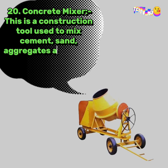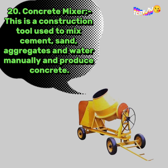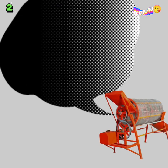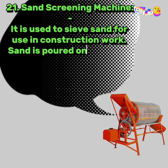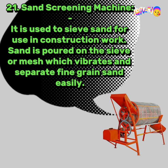20. Concrete Mixer: this is a construction tool used to mix cement, sand, aggregates and water manually and produce concrete. 21. Sand Screening Machine: it is used to sieve sand for use in construction work. Sand is poured on the sieve or mesh which vibrates and separates fine grain sand easily.